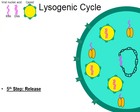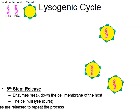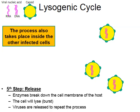That leads us to step five: release. Like the name implies, the viruses are going to be released from the host cell. In many cases the virus releases enzymes that poke little holes in the cell membrane of the host. This will cause the cell to lyse, or to burst, and once that happens those viruses are released to repeat the process. The same release also takes place inside the other infected body cells.